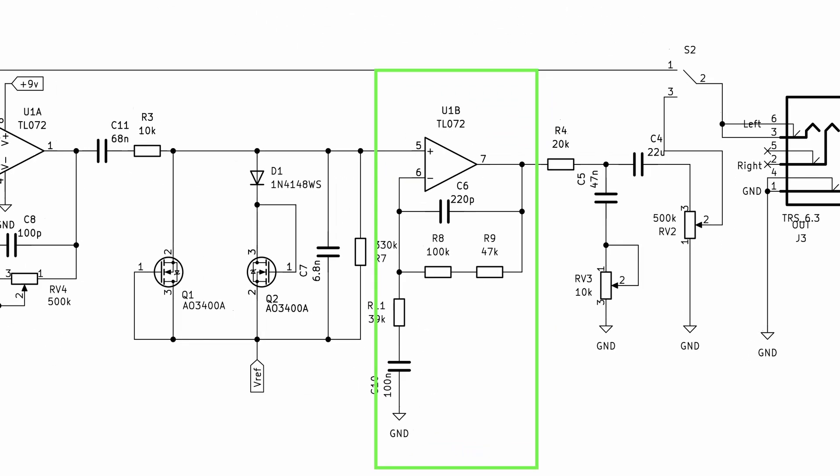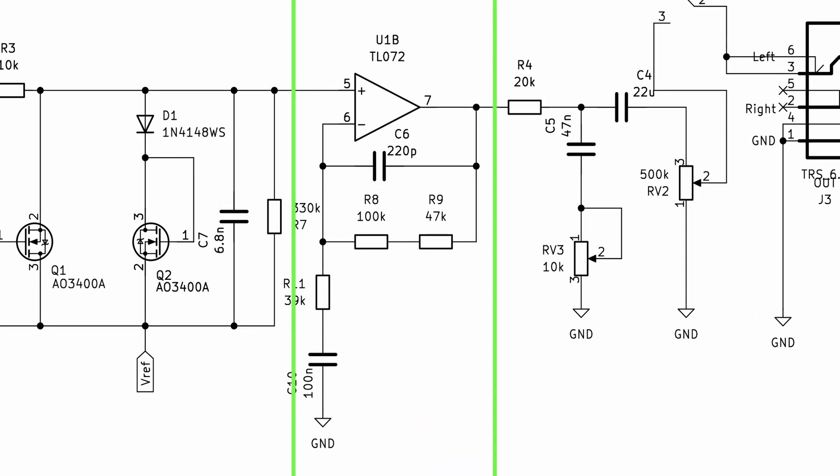But what is this exactly? This is an active high-pass filter. It amplifies the signal while cutting out low-muddy frequencies. It's based on the second part of the op-amp integrated circuit.